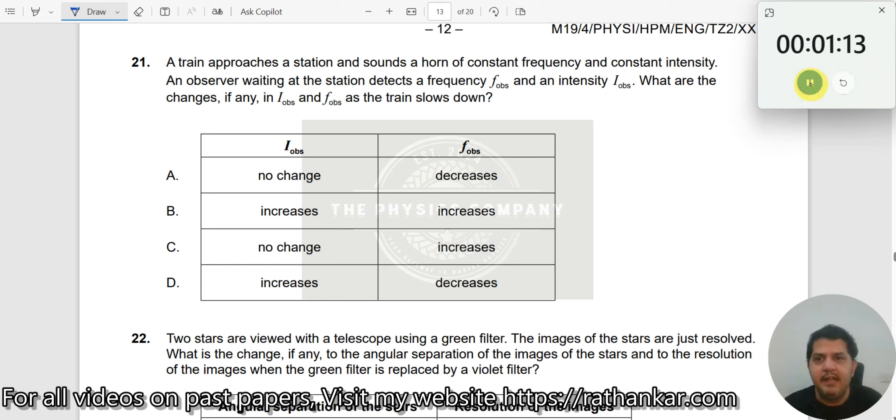Question number 21. A train approaches a station and sounds a horn of constant frequency. Train approaching a station. What is this? This is Doppler effect definitely.